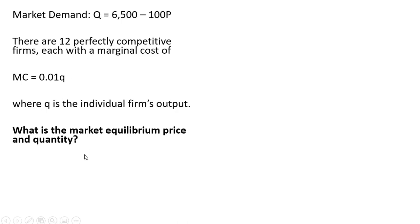What is the market equilibrium price and quantity? We're going to solve for market supply. First we're going to recognize that in perfect competition price equals marginal cost. So where I have marginal cost, MC on the left hand side, I'm going to replace that with P. So price equals 0.01q, we're going to solve this equation for q.